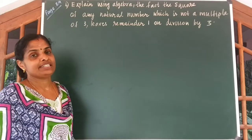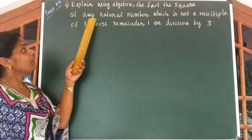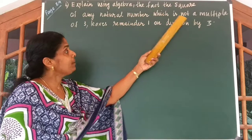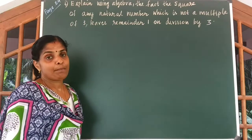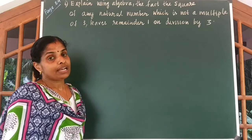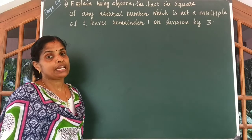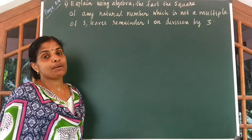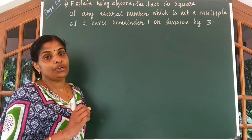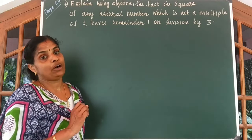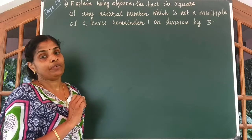Look at the fourth question children. Let us explain using algebra the fact that the square of any natural number which is not a multiple of 3 leaves remainder 1 on division by 3. A number which is a multiple of 3 can be written as 3x. For example, 6 can be written as 3 into 2; 9 is a multiple of 3, written as 3 into 3. So you should know the general form of a multiple of 3 and of a number which is not a multiple of 3.